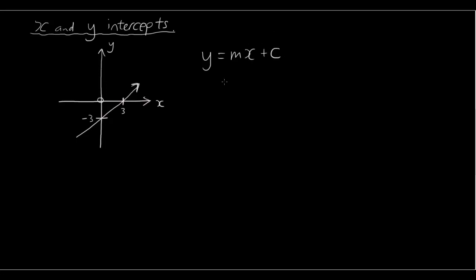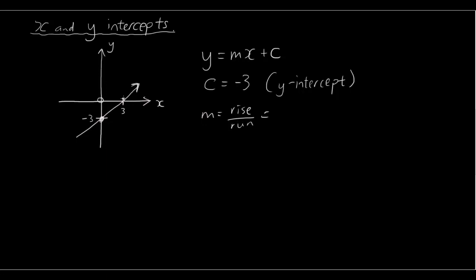We know straight away that the y intercept is c, so c equals negative 3 because c is the y intercept. Now what is the gradient? Well the gradient is rise over run. We can see that the rise from one point to the other is 3 units — it's gone up by 3 units. The rise is 3 and the run is also 3, so 3 over 3 is 1. So this equation is y equals x minus 3. That is the equation of this line.